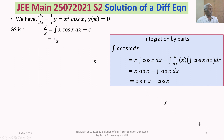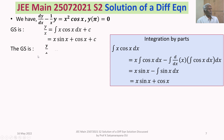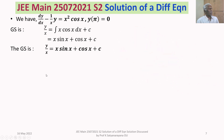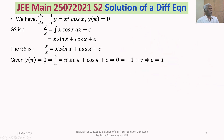Substituting back, we get y/x equals x sin x plus cos x plus c. So the general solution is y/x = x sin x + cos x + c. To evaluate the constant c, we use the given condition y(π) = 0.